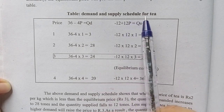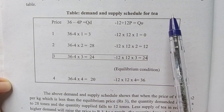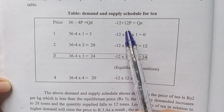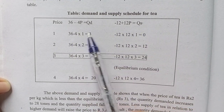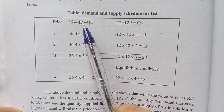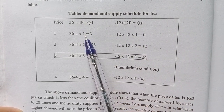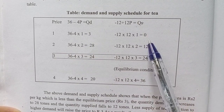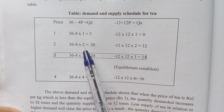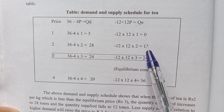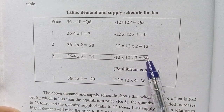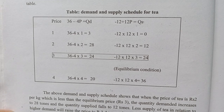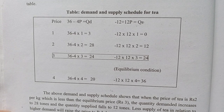The demand and supply schedule shows: QD equals 36 minus 4P and QS equals minus 12 plus 12P. At price 1, QD equals 32 and QS equals 0. At price 2, QD equals 28 and QS equals 12. At price 3, QD equals QS equals 24 — the equilibrium.